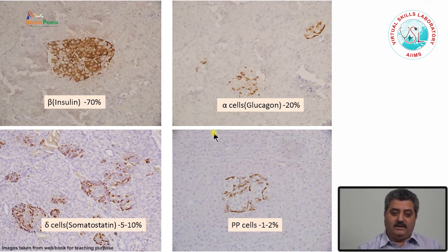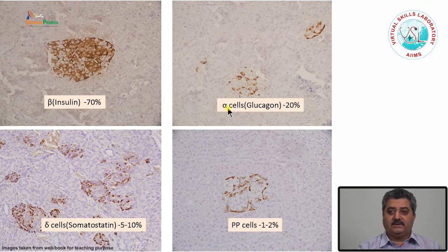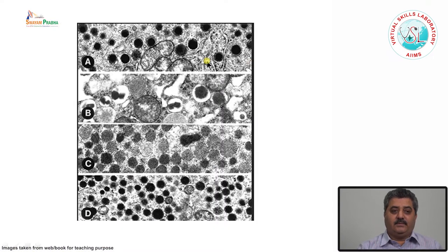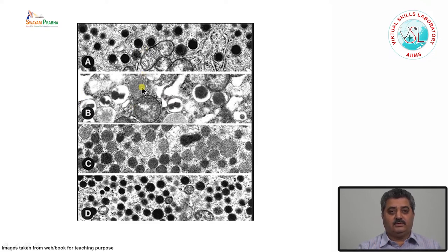The majority of the pancreatic islet cells are the insulin-producing beta cells, comprising about 70% of all islet cells. The others are alpha cells which produce glucagon, delta cells which produce somatostatin, and PP cells which produce pancreatic polypeptides. These hormone-producing cells can also be differentiated based on the character of their neurosecretory granules, which have different shapes and sizes.